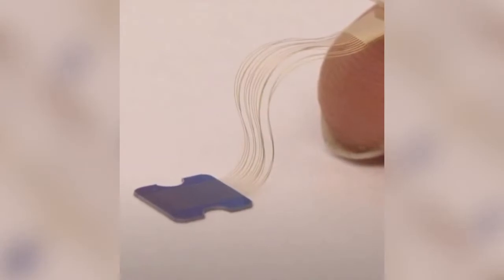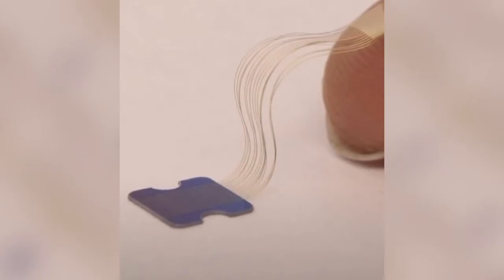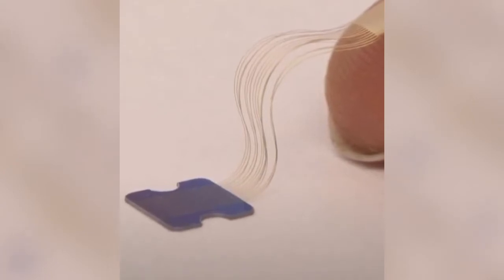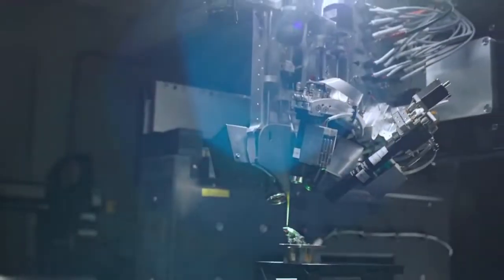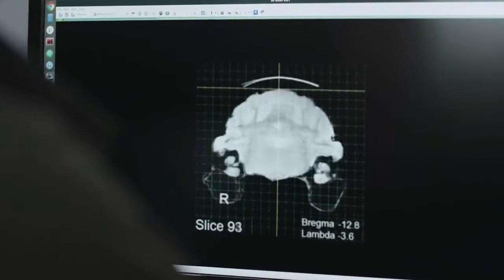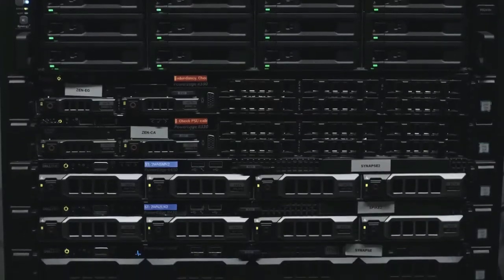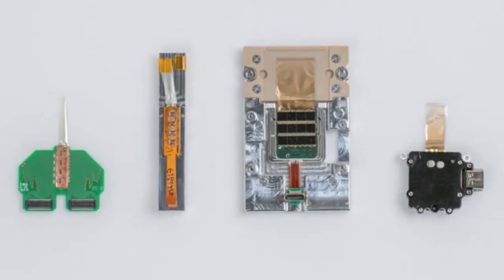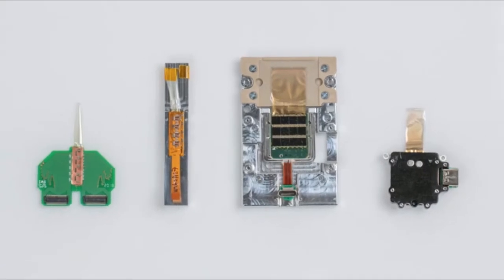Neuralink mounts a chipset called the N1 chipset in your skull, which is 8 millimeters in diameter and has a lot of wires holding the electrodes and insulation for the wires. These wires are surgically placed in your brain with the help of a robot. According to the company, the wire is as thick as a neuron in your brain and 100 microns thinner than a hair. For comparison, imagine the diameter of your hair and divide that diameter by 10.